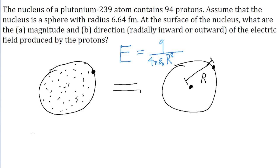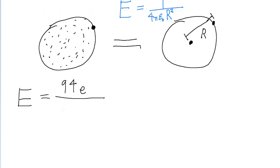Let's apply that to this problem. The magnitude of the electric field is equal to the charge of the nucleus, which is 94 protons. So Q = 94e divided by 4π ε₀, multiplied by the square of the nuclear radius.